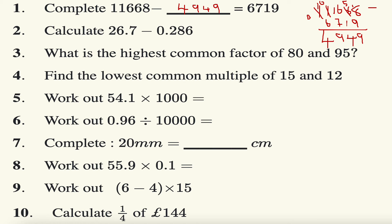Right guys, next question: work out 26.7 minus 0.286. So again, making sure that our place values are in the right place. I'm going to put some zeros here as placeholders. Zero take away 6 I can't do, so I can't borrow from there, so I have to borrow from here. That becomes a 6, that becomes a 10, borrow that again, that becomes a 9, that becomes a 1.